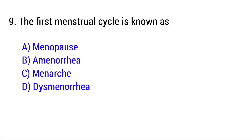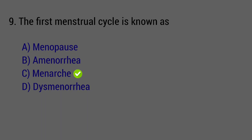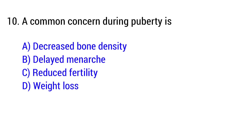Question number 9: The first menstrual cycle is known as — the right answer is Option C: Menarche. Question number 10: A common concern during puberty is — the right answer is Option B: Delayed menarche.